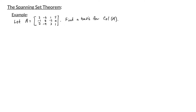I'm going to start by looking at an example. In this example we have a 3 by 4 matrix A with entries 3, negative 6, 1, 5, negative 1, 2, negative 2, 0, 2, negative 4, 3, 1. We're asked to find the basis for the column space of A.